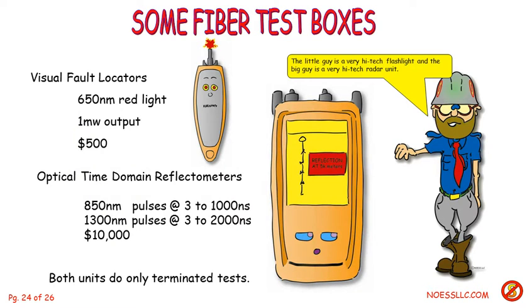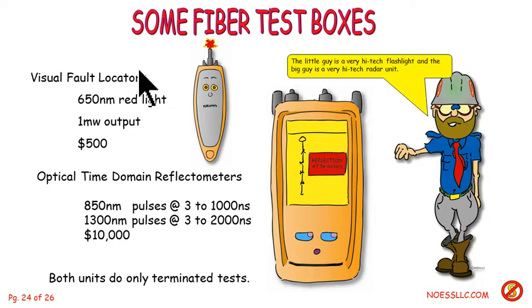How do you go about fixing and checking some of this stuff? Electronics I've been doing for almost 50 years — very familiar with that. But when you get into fiber optics, how do you do basic tests? How do you know you have continuity from one patch panel to another? One way to do it is to use a flashlight — only it's a high-tech flashlight: a visual fault locator.